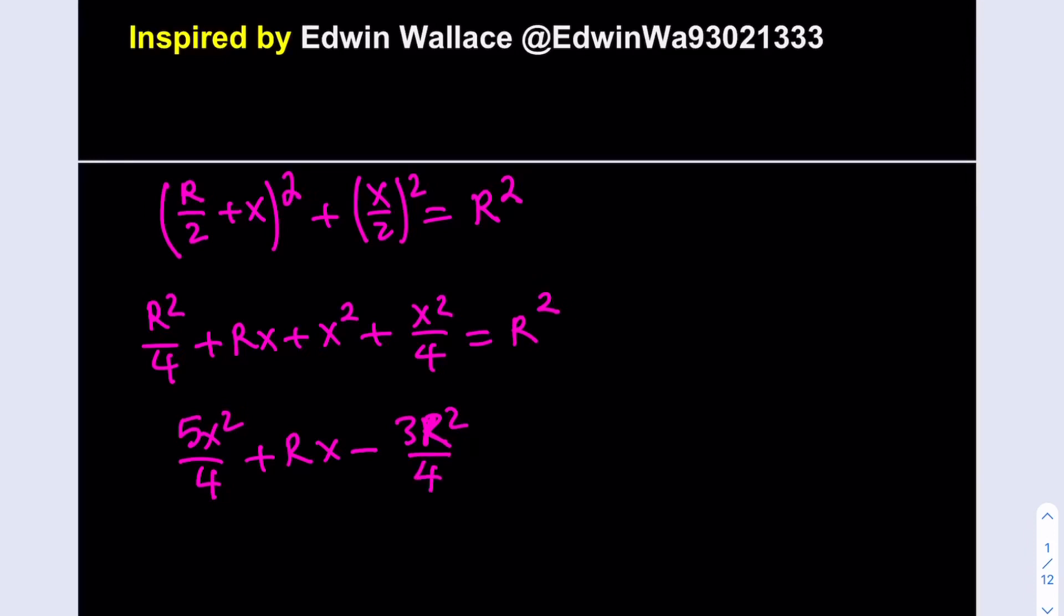The whole thing equals zero. Awesome. Now how do you solve for x? We're going to turn this into a quadratic equation but let's eliminate all the fractions. Multiply everything by 4. That should give you this.